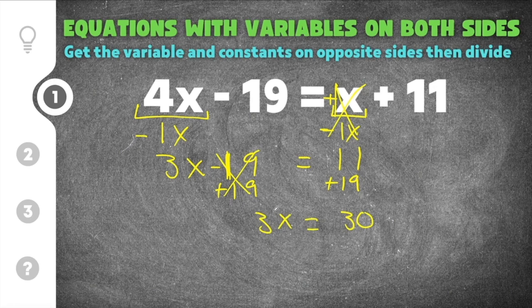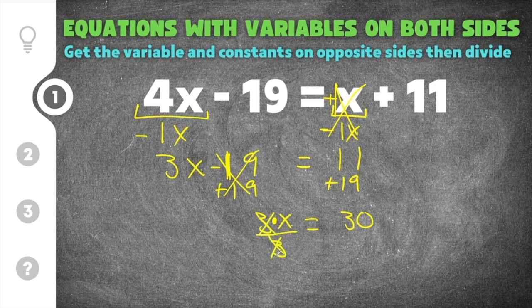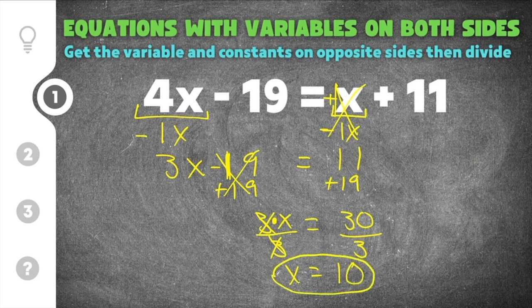Now the last step is to get rid of this coefficient. When you have a coefficient like this, it's like saying 3 times x. We have to undo 3 times x — the opposite of multiplication is division — so I'm going to divide by 3. That way the 3s will cancel, and we're left with just x on this side. So on the left we divided by 3, which means on the right we also have to divide by 3. So we're going to go 30 divided by 3, and we get 10. The solution to this equation is x equals 10.